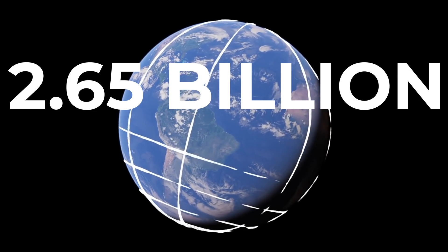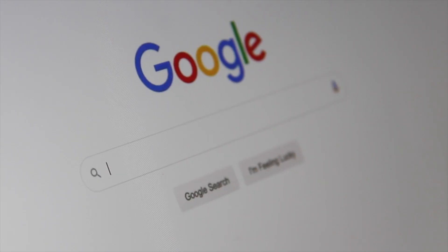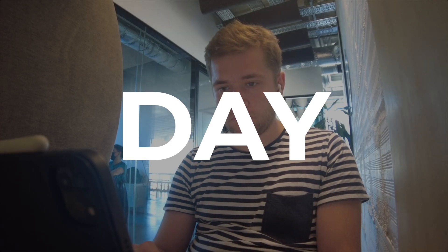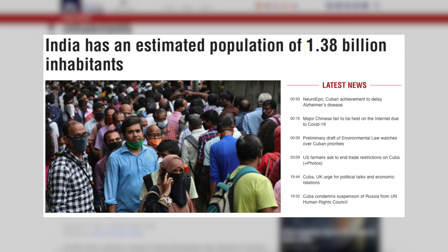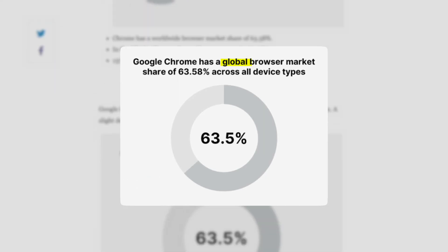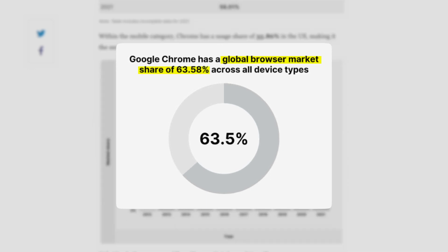2.65 billion people — that is how many people use Google Chrome every single day. To put that into perspective, that is almost equivalent to double the population of India, which is 1.38 billion. Google Chrome has a global browser market share of 63.58% across pretty much every device type, and it's currently the primary browser used across the whole internet.